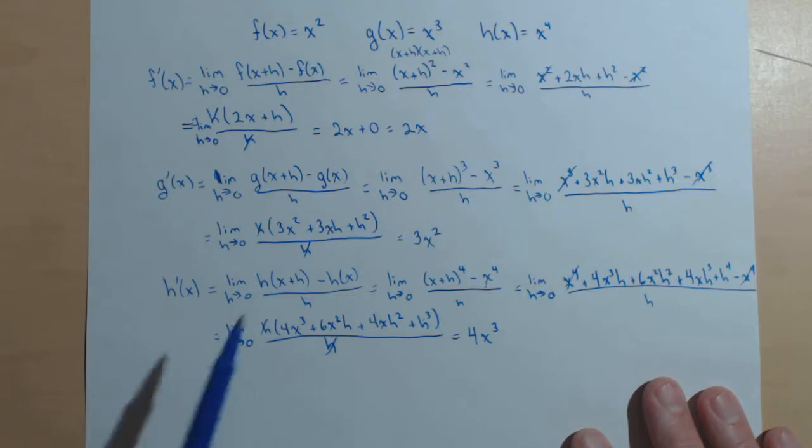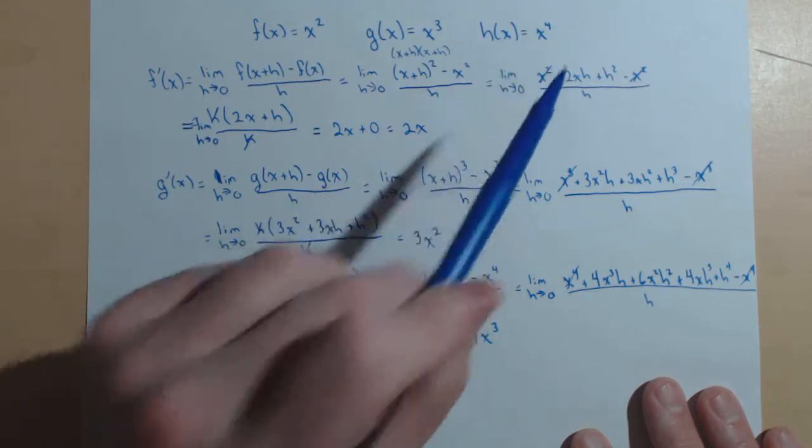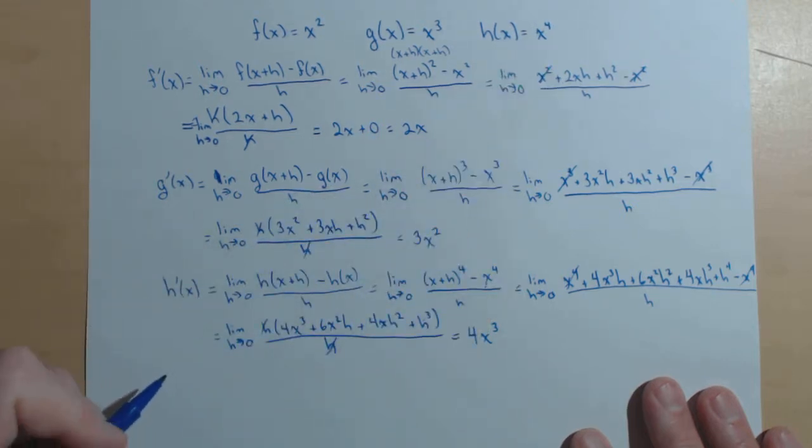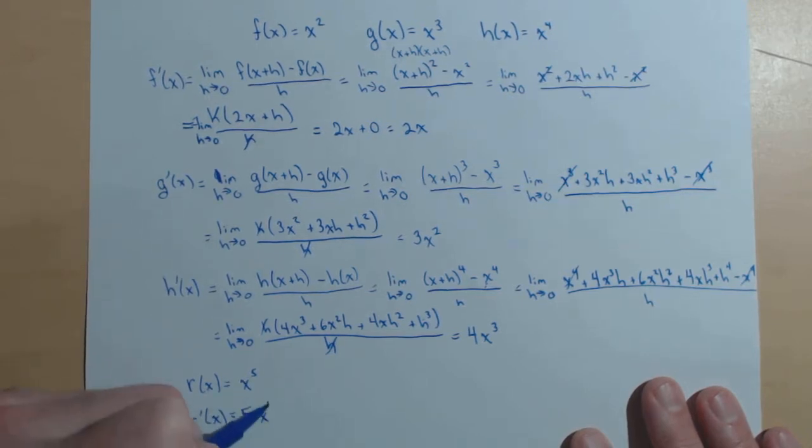So again, you might be seeing the pattern now. The exponent comes down in front, and you decrease the exponent by 1. So for instance, if we had some function, let's call it r of x, that was x to the fifth, then r prime of x would be: drop the power down, 5x, decrease the power by 1.